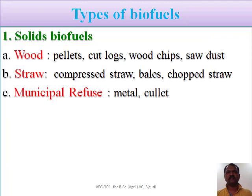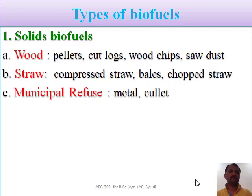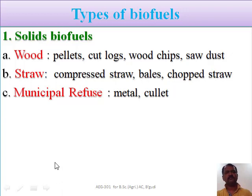Biofuels are classified into several types. The first type is solid biofuels. From wood we are making pellets, cut logs, wood chips, or sawdust which are used as direct biofuels for burning or the combustion process. Similarly straw — compressed straw, bales, chopped straw — is used for making pellets or after densifying this straw it can be used for the combustion process. Municipal refuse or municipal waste is also used as a type of solid biofuel.